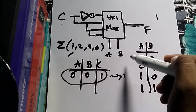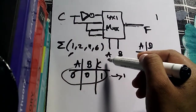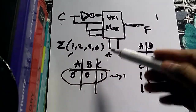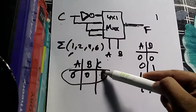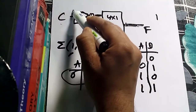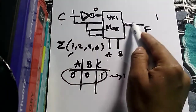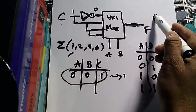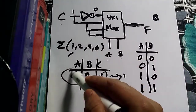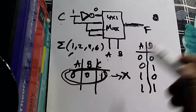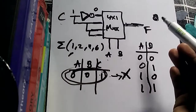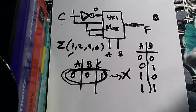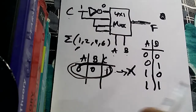With A=0 and B=0, the select lines cause the first input line to connect to the output. C equals 1, so the value 1 enters the NOT gate and becomes 0. This 0 is then passed to the output F. So the output we get is 0, which means minterm 1 is not being passed correctly. This option fails, so we cancel it.